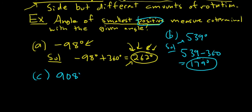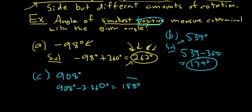Example C: about 908 degrees. Subtracting 360 once won't work because we'd still have a really big number, so we subtract 360 twice: 908 minus 2 times 360 equals 188 degrees. If we subtract 360 again it'll be negative, so 188 is the smallest possible positive angle coterminal with this.